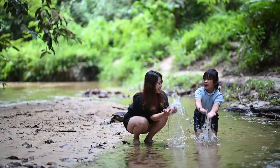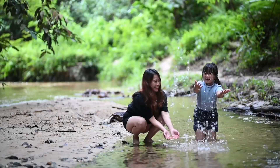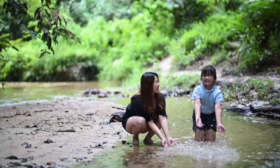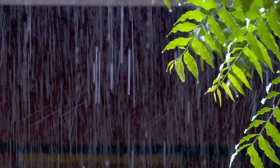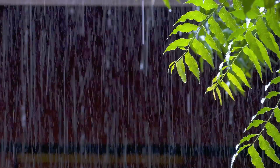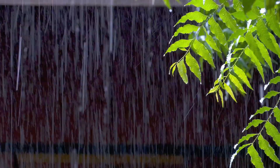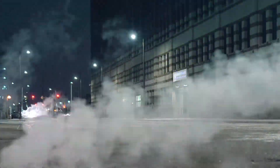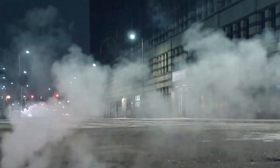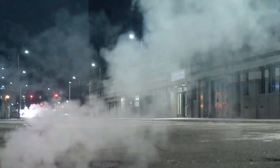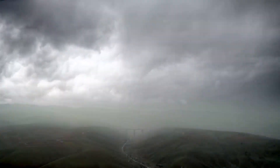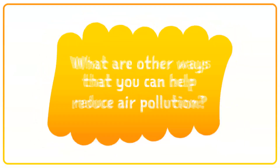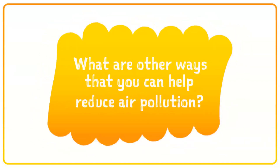Water is very important to sustaining life and is much more than a glass of water. Water goes through a never-ending cycle called the water cycle. It has a relationship with air pollution, how it travels, and the creation of acid rain. What are other ways that you can help reduce air pollution?